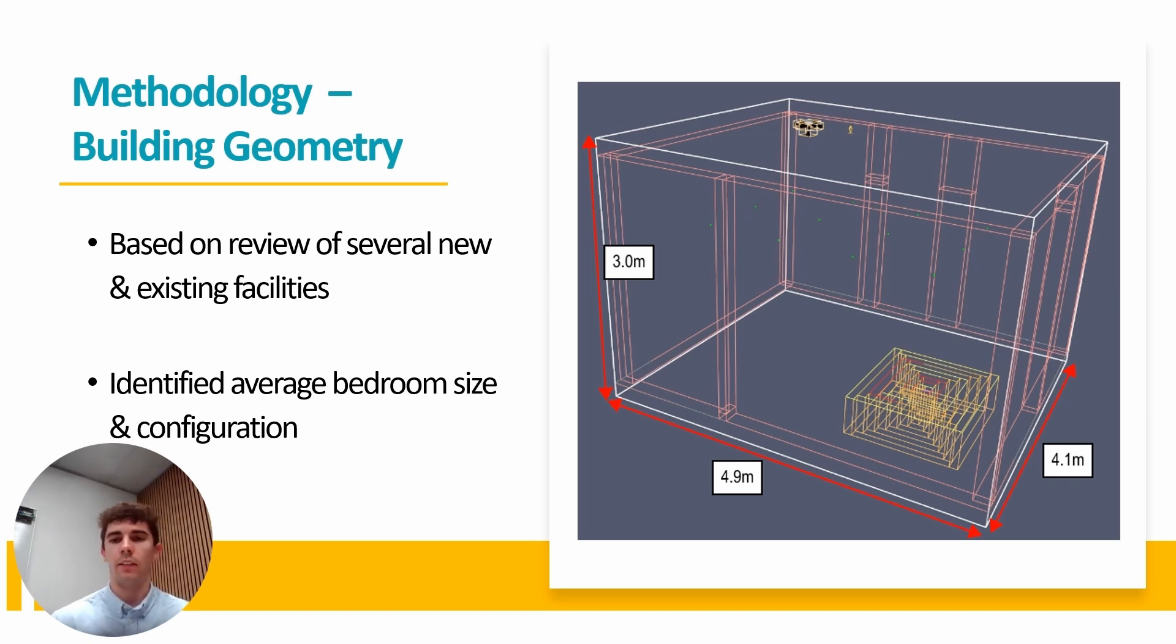The length of it was 4.9 meters, the width 4.1, and a height of 3 meters. The detector was also placed in accordance with the New Zealand standard for fire detection and alarm systems, which equated to a distance from the center of the fire of about 3.8 meters.